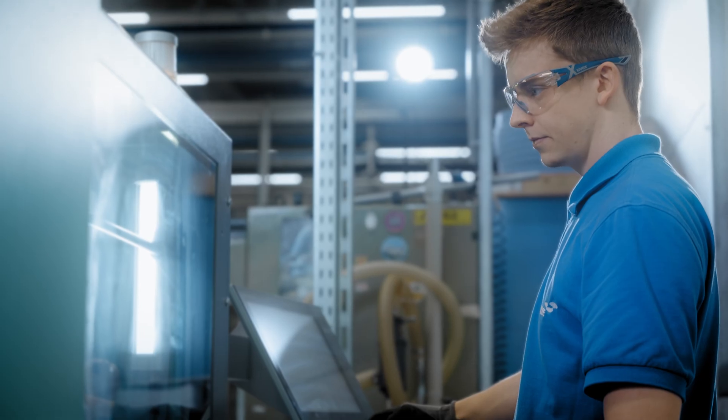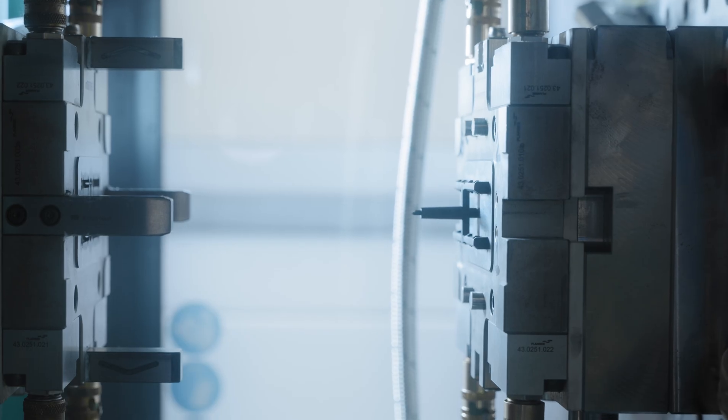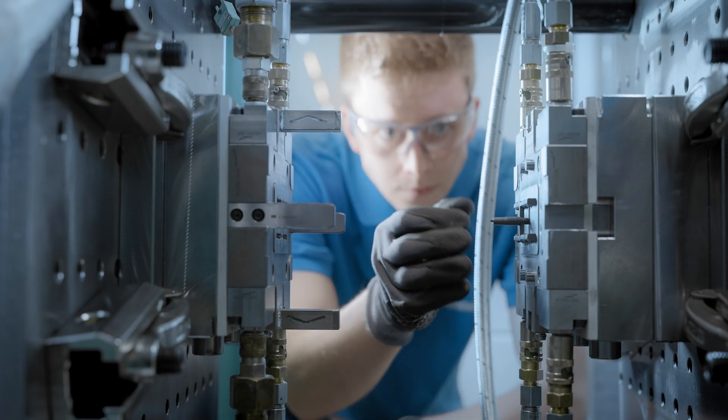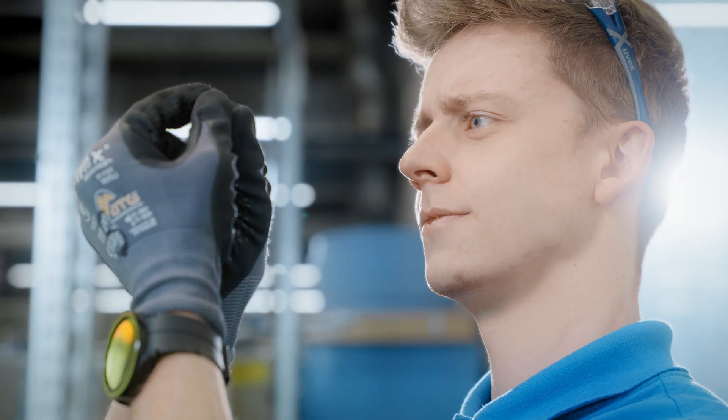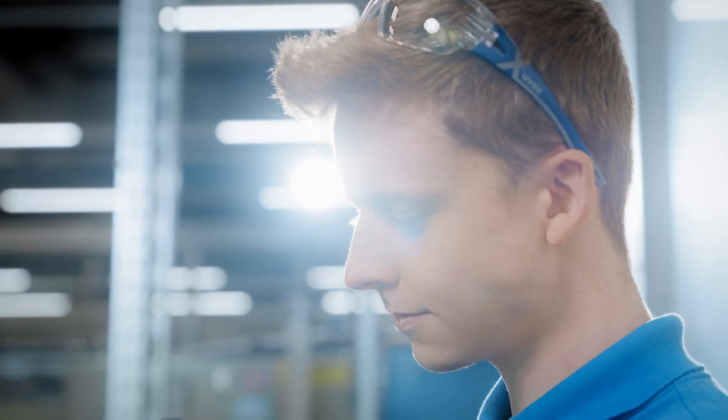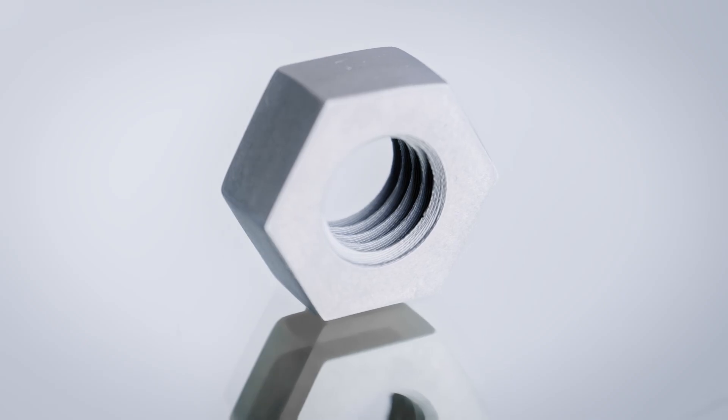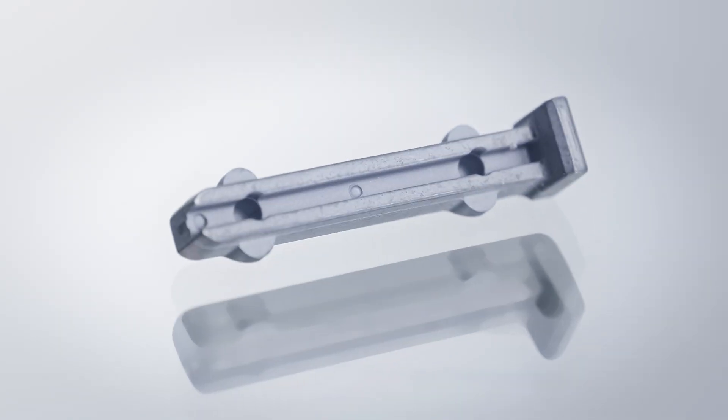Metal injection moulding is used to produce the components in near-net shape by pressing the feedstock into the cavities under high pressure. This not only saves resources, but also makes it possible to produce complex geometries in any size for the electronics industry and medical technology.